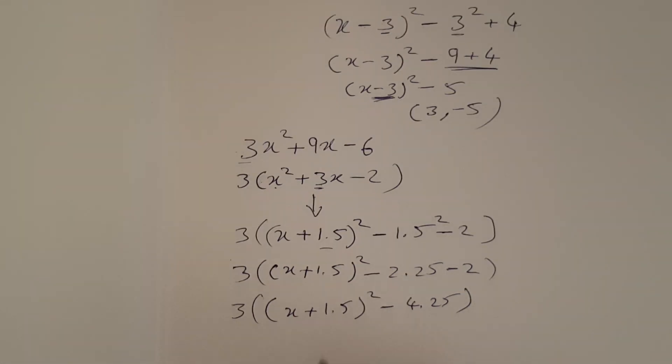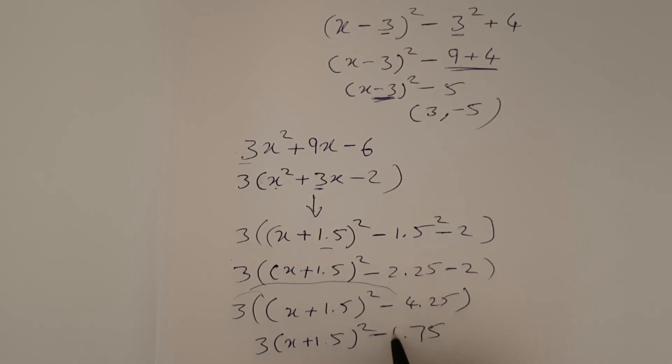3 outside. So, the last step will be, multiply 3 with both. First, just write 3 here outside the bracket. 3(x + 1.5)² minus 4.25 times 3, which is 12.75. That's it.